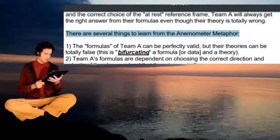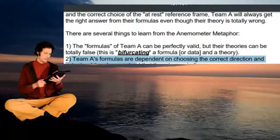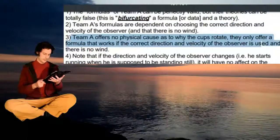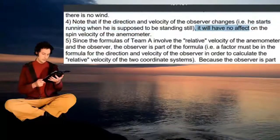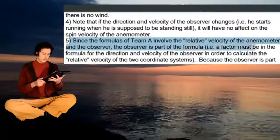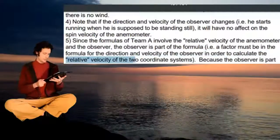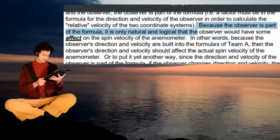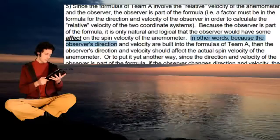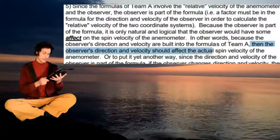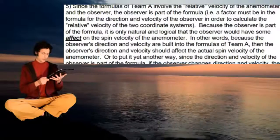There are several things to learn from the anemometer metaphor. The formulas of Team A can be perfectly valid but their theories can be totally false. Team A's formulas are dependent on choosing the correct direction and velocity of the observer and on there being no wind. Team A offers no physical cause as to why the cups rotate — they only offer a formula that works if the correct observer direction and velocity is used and there is no wind. Note that if the direction and velocity of the observer changes, it will have no effect on the actual spin velocity of the anemometer. Since the formulas of Team A involve the relative velocity of the anemometer and the observer, the observer is part of the formula. Because the observer is part of the formula, it is only natural and logical that the observer would have some effect on the spin velocity of the anemometer — but it doesn't.